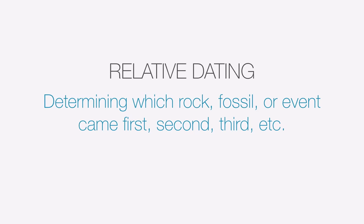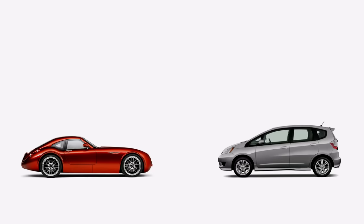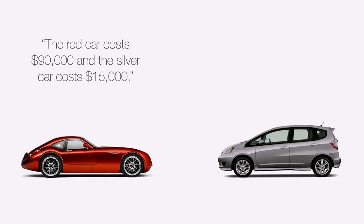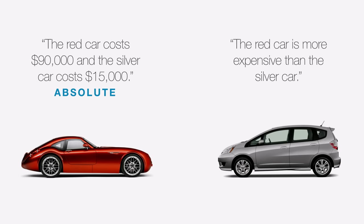Let me give you one more example of the difference between absolute and relative dating. What if I were to make a statement like, the red car costs $90,000 and the silver car costs $15,000? Because I'm using specific numbers, this is an example of using an absolute comparison. On the other hand, I could make a statement like, the red car is more expensive than the silver car. Because I'm not using any specifics, I'm simply doing a comparison — this would be an example of a relative comparison.